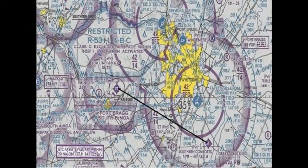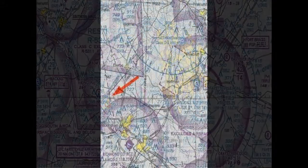Draw that line on your chart to where you're going, then put your plotter there and figure out your course. That's your true course.